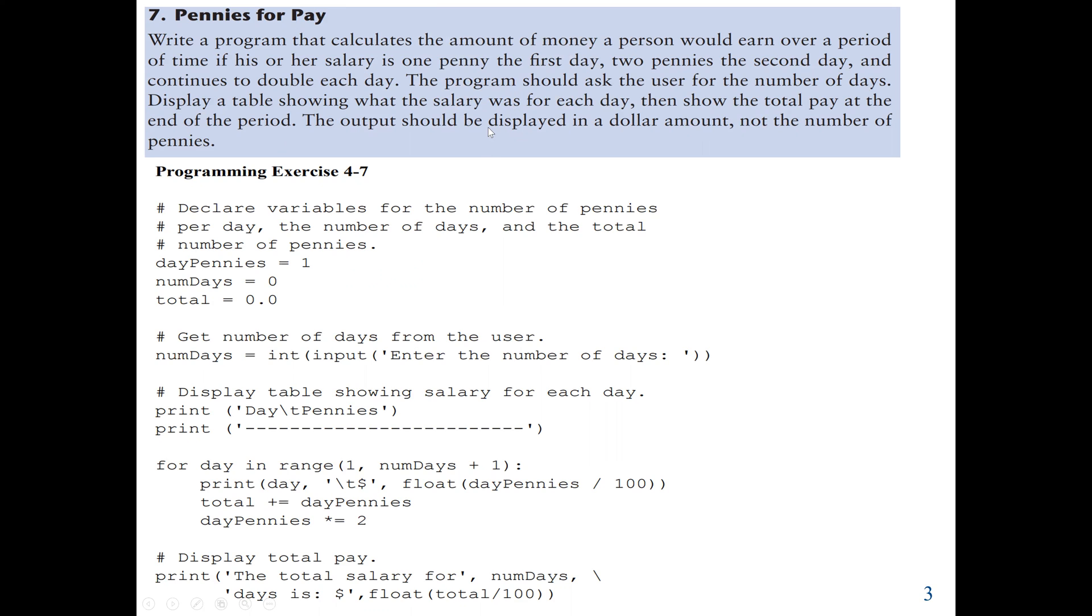For example, if it's 30 days, we can use a loop where each day the salary will be doubled. First, we get our input and need a variable to store it. We need three variables here.